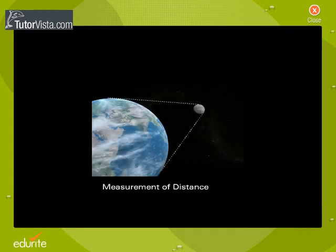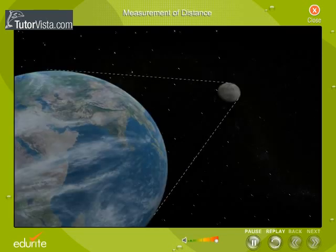Measurement of Distance. It is not always possible to measure the distance from any far-off objects by direct measurement. Therefore, indirect methods are used to measure the distances.